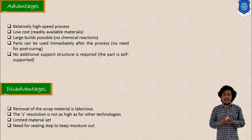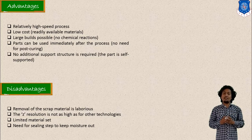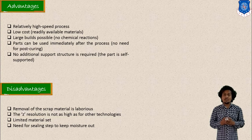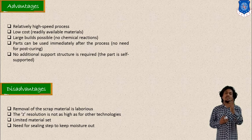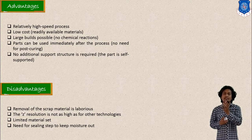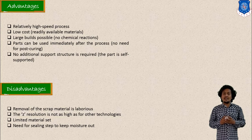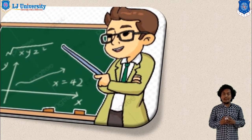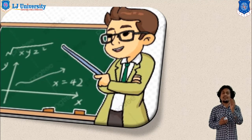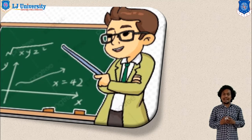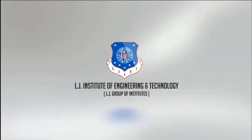One limitation is that z-resolution is not as high as other technologies, since sheet material thickness limits close tolerances in the z direction. Another limitation is that the scrap or excess material from laser scanning is difficult to restore, which is a key consideration for laminated object manufacturing. This process is a solid-based rapid prototyping technique using sheet or paper material. Thank you.